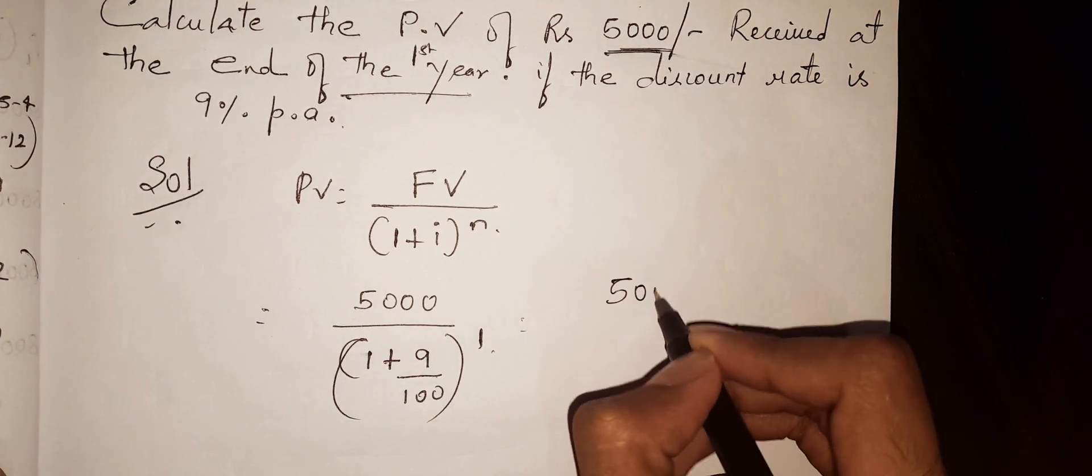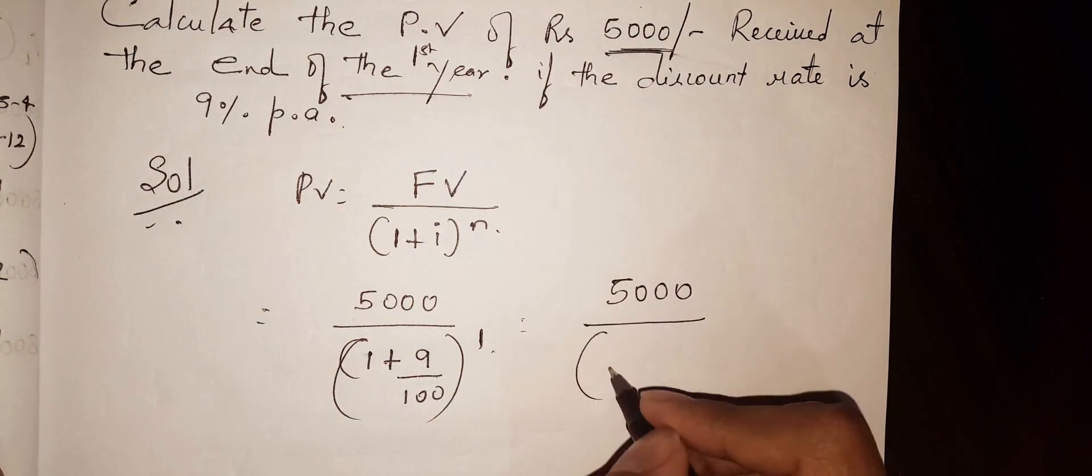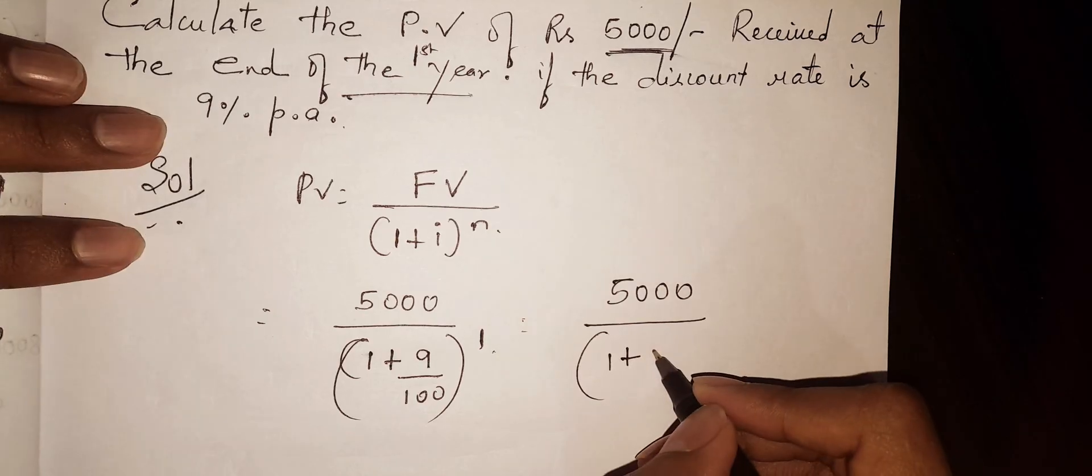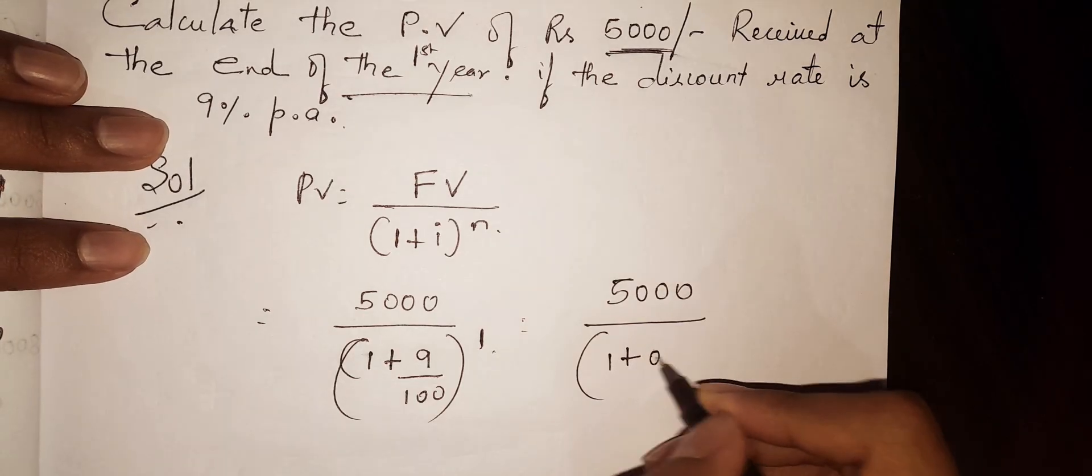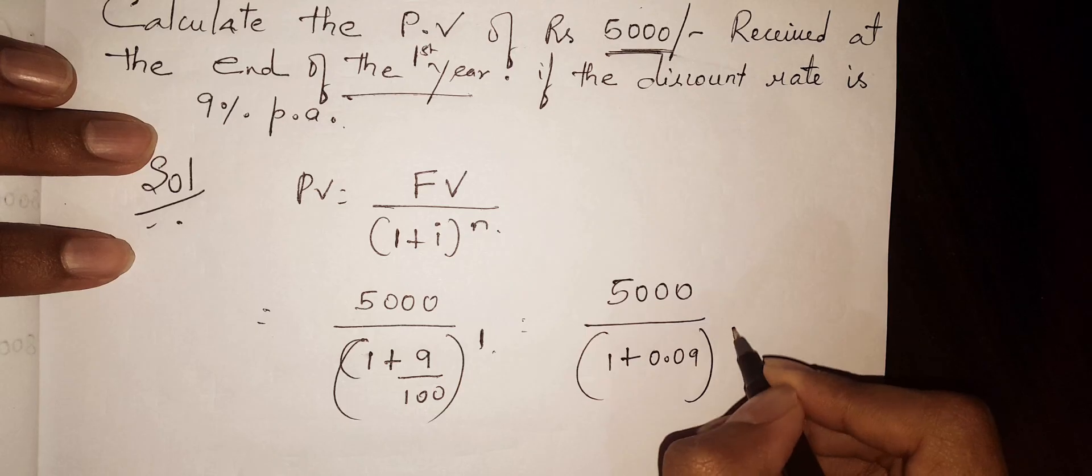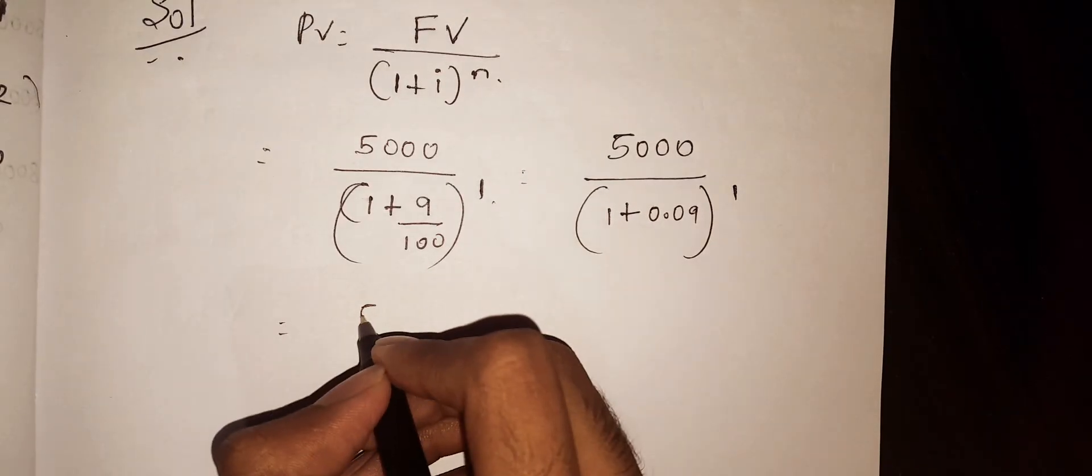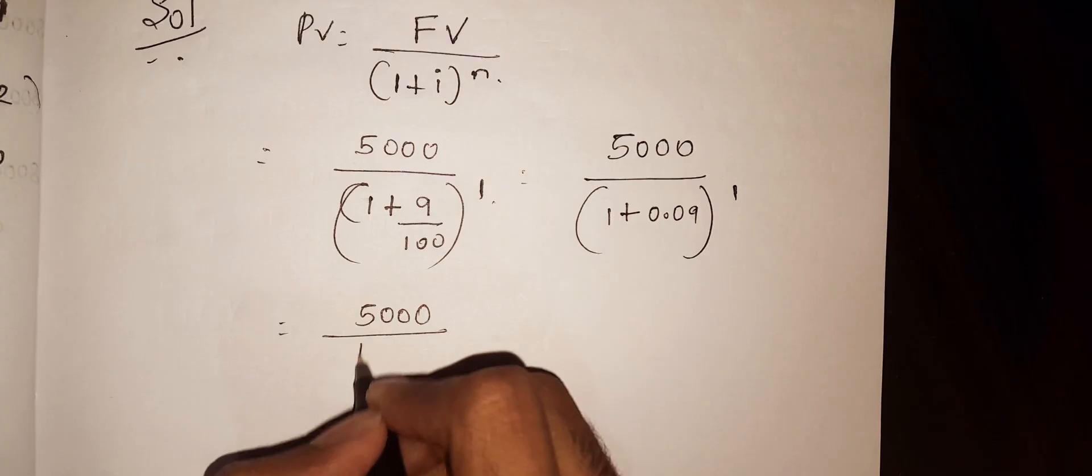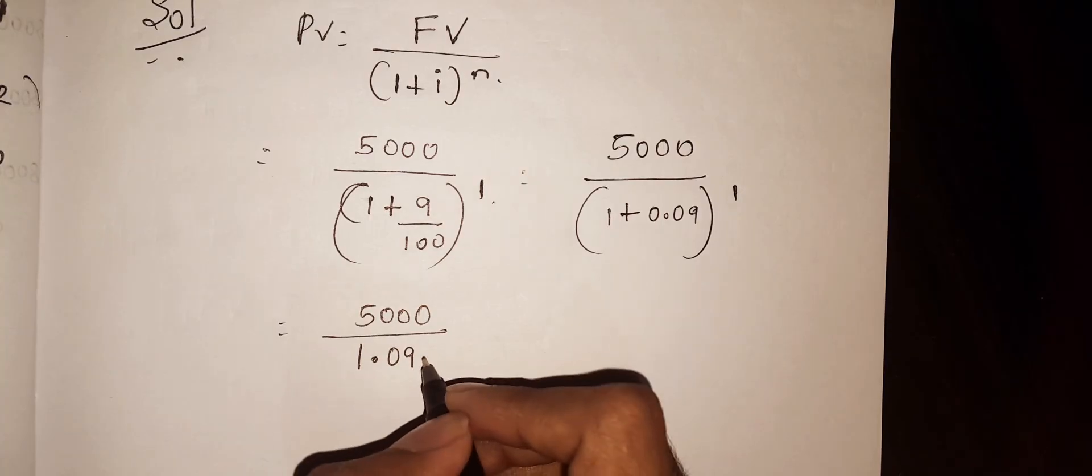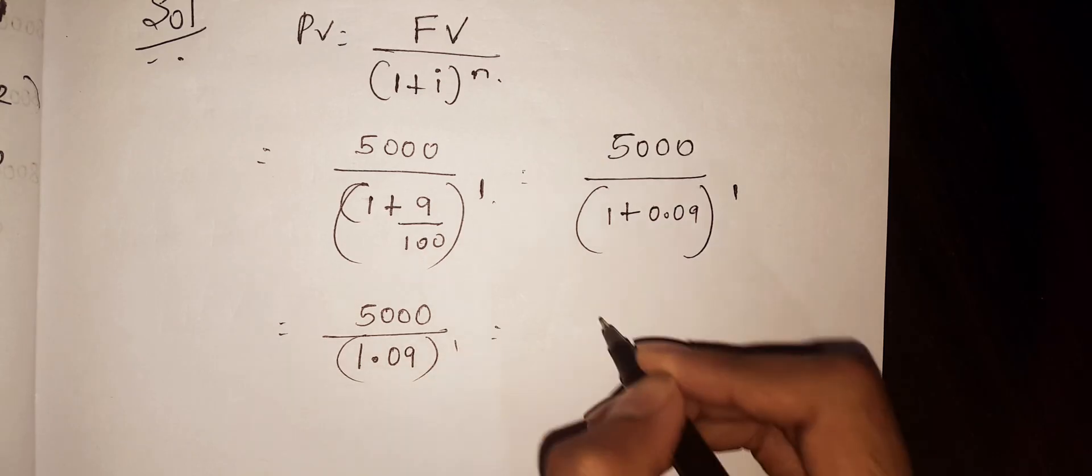So, equals 5,000 divided by (1 plus 9 divided by 100), which equals 5,000 divided by (1 + 0.09) to the power of 1. Next, 5,000 divided by 1.09 to the power of 1.